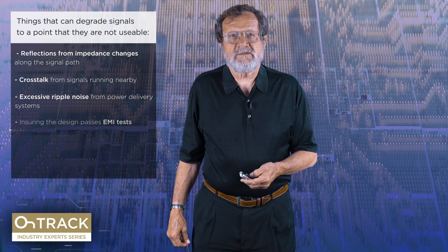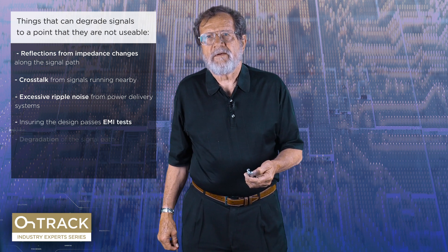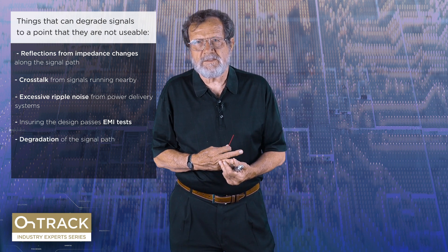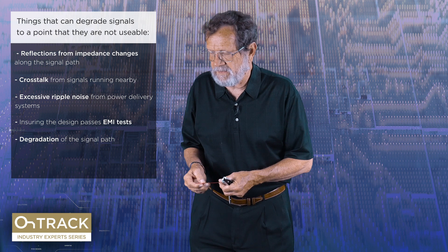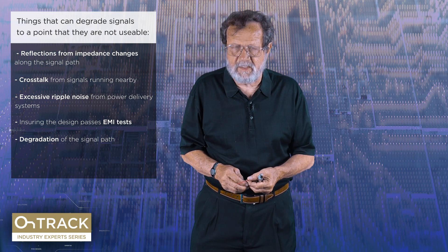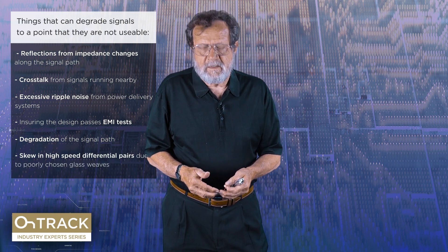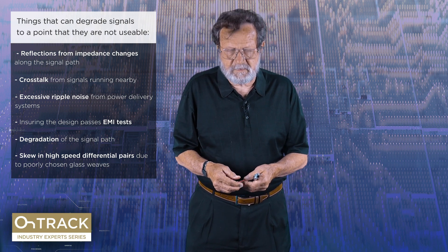Of course the next thing is making sure we pass the EMI test. And then this last one has to do with going up the speed curve where we have to start worrying about losses in the path — those losses come from two places: the copper itself and the dielectric that the energy is traveling through. And there's something that creeps in when we get above about five gigabits per second, which is skew induced in the two sides of a differential pair because the glass weave has not been chosen correctly.